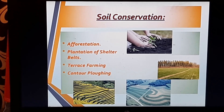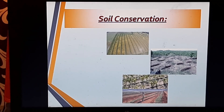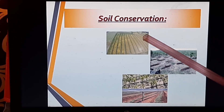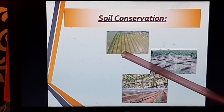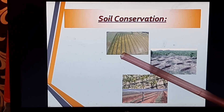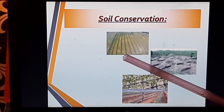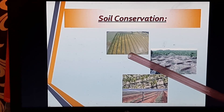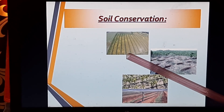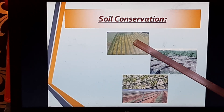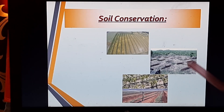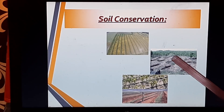To summarize so far, soil conservation methods include: afforestation, plantation of shelter belts, terrace farming, and contour ploughing. Looking at more pictures, we see a cultivable field with two different colors of crops — one is the agricultural crop and the other is cover crops or strip crops, where strips of grasses or other crops are grown between agricultural crops. When the fields are harvested, these cover crops bind the soil, so this is termed strip cropping.